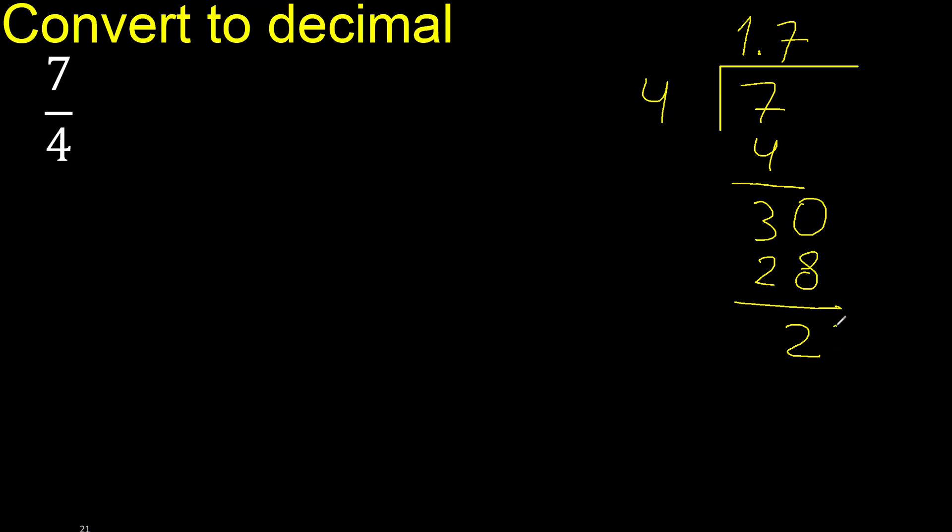Complete with 0. Point is here. 20. Therefore 4 multiplied by 5 is 20. 20 minus 20 is 0. Therefore finish here.